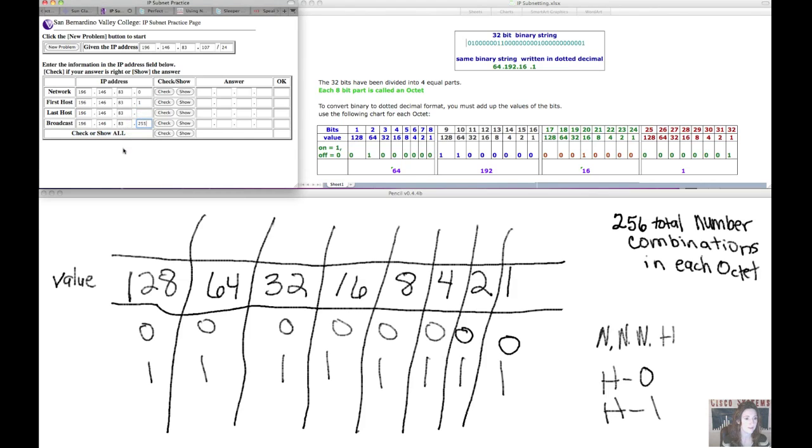So if we know 255 is our last address, then 254 would be the last address that we can apply to a device.